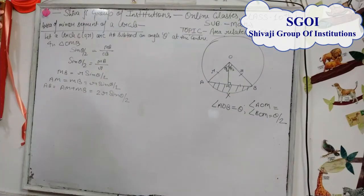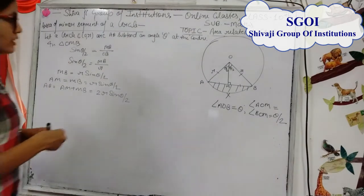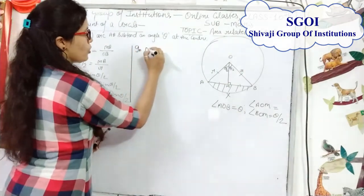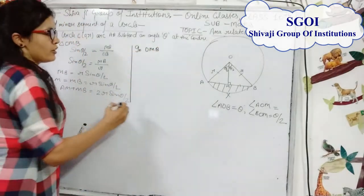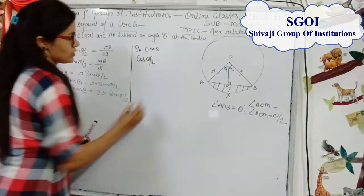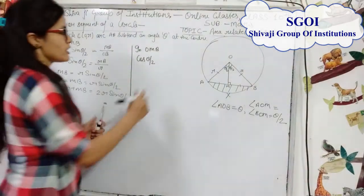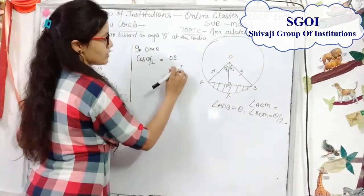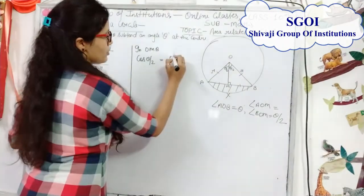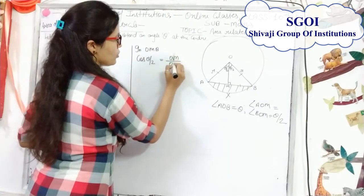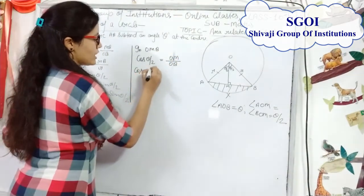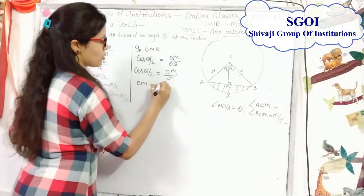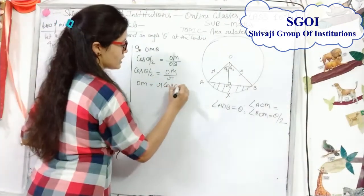Again in triangle OMB, we take cos(θ/2). We know cos θ equals base upon hypotenuse, and the base is OM and hypotenuse is OB. So cos(θ/2) equals OM upon R, giving OM equals R·cos(θ/2).